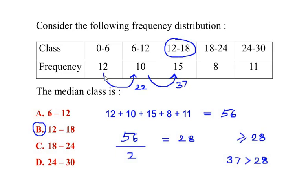So then we started adding the frequencies one by one. 12, we cannot consider it because it is much smaller than 28, so 0 to 6 is not the median class. Then we added it with 10 which belong to 6 to 12. But 12 plus 10 gave us 22 again which is smaller than 28, so we cannot consider 6 to 12 as the median class.